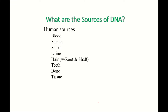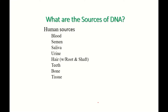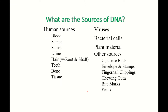What are the sources of DNA? We have human sources such as blood, semen, saliva, urine, hair, teeth, bone, and tissue. We also have other sources such as viruses, bacterial cells, and plant material. In forensic science, sources also include cigarette butts, envelope and stamp seals, fingernail clippings, chewing gum, bite marks, and feces.